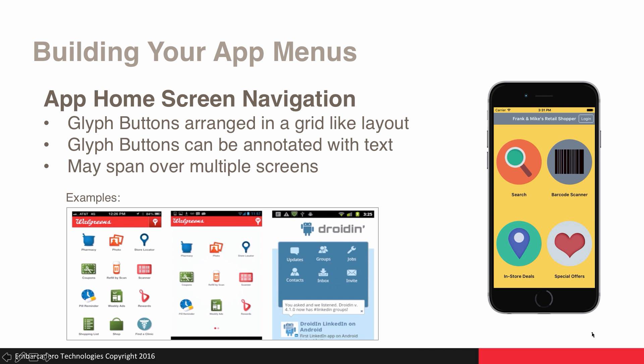Home screen navigation is another popular application menu type seen in many retail applications today. Similar to tab-bar navigation, it puts the focus area right onto one screen and makes it easy for the user to find information. For example, in an IoT solution demo, the key functionality includes searching for products, scanning a product by barcode, finding in-store deals, and finding special offers. It's usually arranged via a grid-like layout, and glyph buttons can be annotated with text. You could also set up a client-aligned tab control with multiple tabs and set the tab position to none, enabling multiple home screens that the user can swipe between.